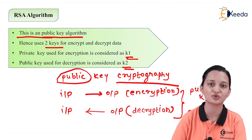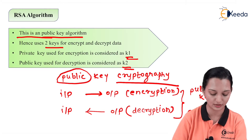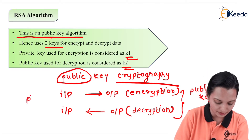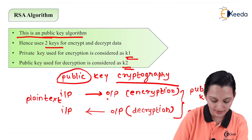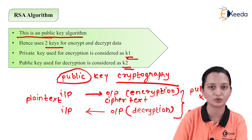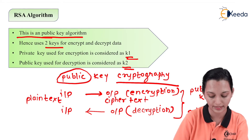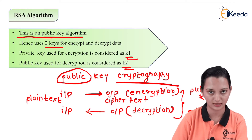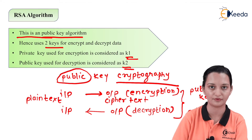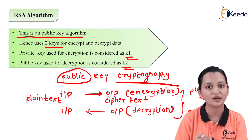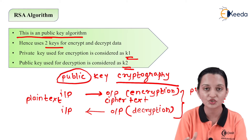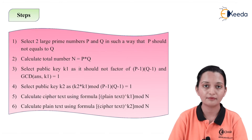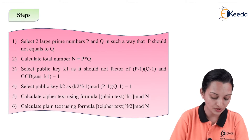We are interested to calculate the values of k1 and k2. In cryptographic language, the input is known as plain text and the output is known as ciphertext. We use the public key k2 to convert plain text into ciphertext, and the private key k1 to convert ciphertext back into plain text. This is the basic idea behind RSA algorithm.